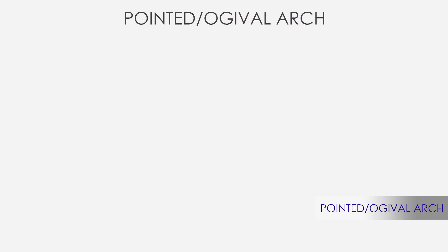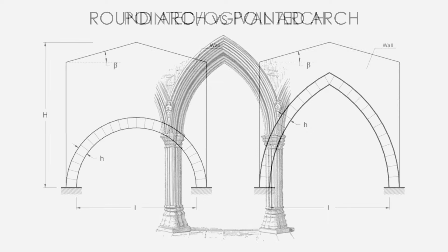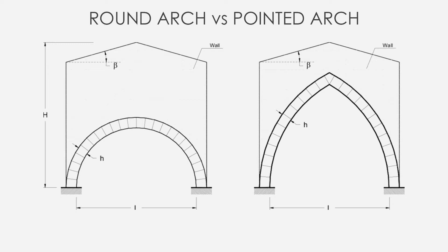The pointed arch has a pointed crown, whose two curving sides meet at a relatively sharp angle at the top. Compared to the round arch, the pointed one allows reaching dramatically greater heights, making more space for windows. The combination of pointed arches led to the development of the pointed ribbed vault.